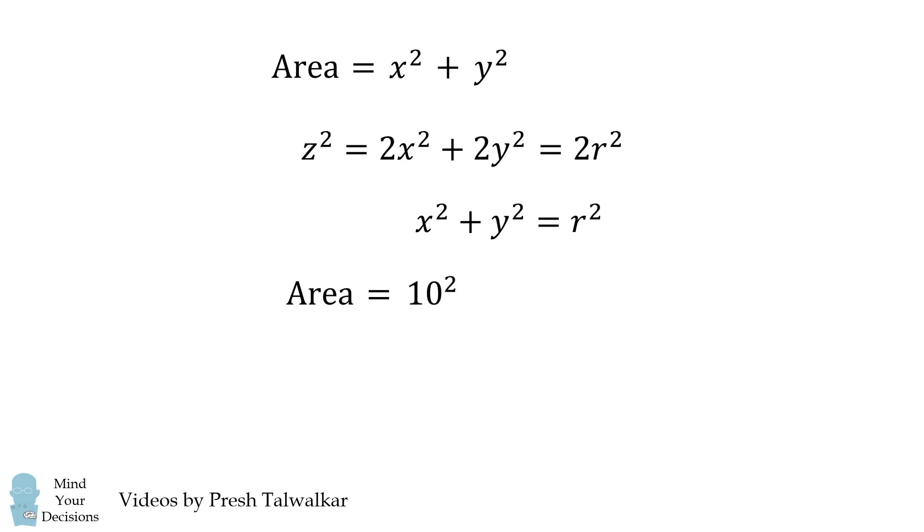Thus, the total area will be equal to r squared. If r is equal to 10, it's equal to 10 squared, which is equal to 100. And that's our answer, regardless of how the two side-by-side squares are inscribed. Incredible!